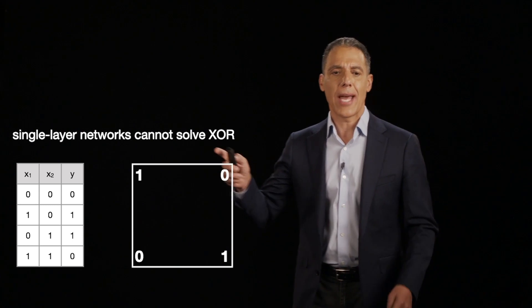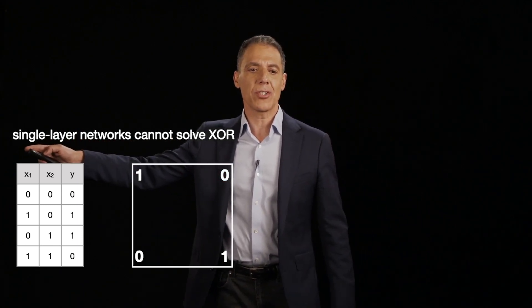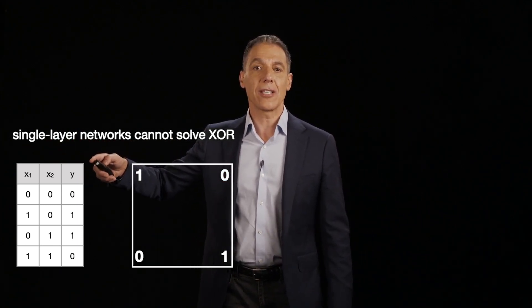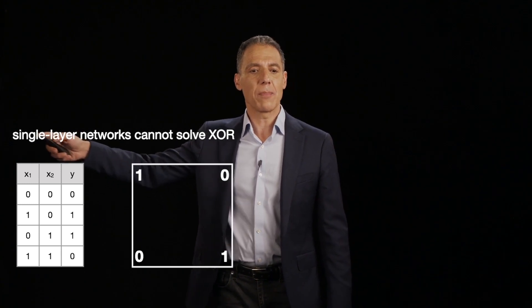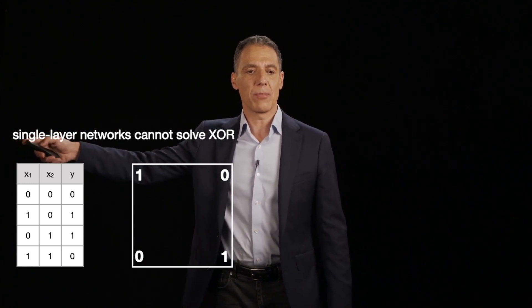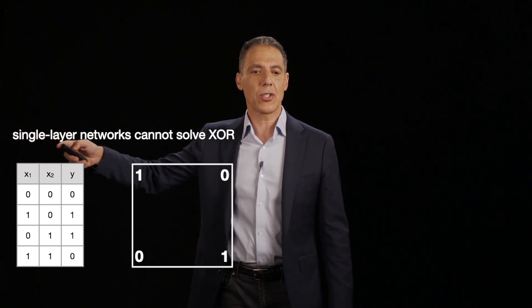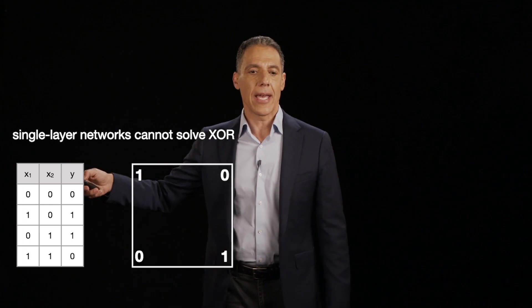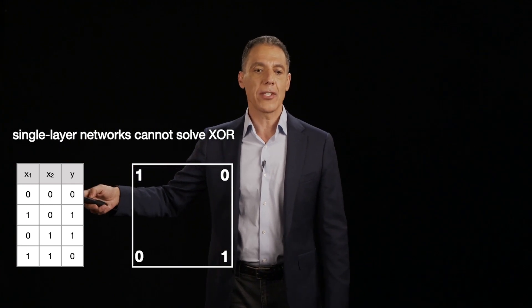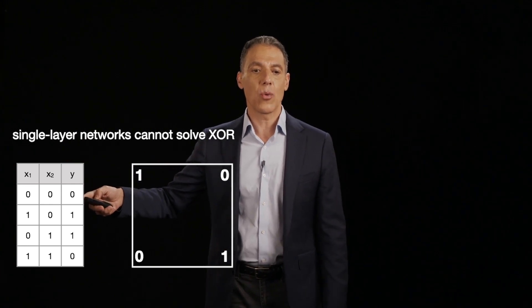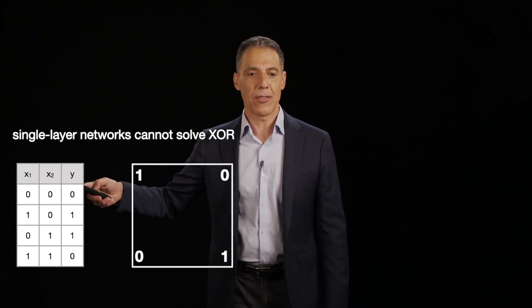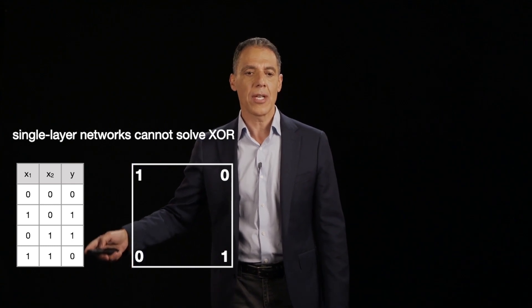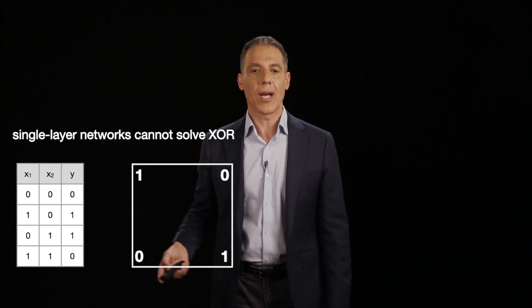Let me remind you what XOR is. I'm going to have two inputs, X1 and X2, and a single output Y. Think about this as: my input is X1, X2, and my label is Y. The label Y should be 0 when both inputs are equal — so either (0,0) or (1,1) — and it should be 1 otherwise.